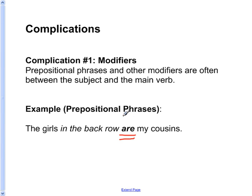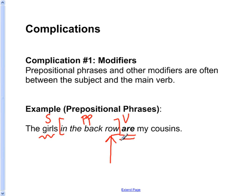Let's look at an example of a prepositional phrase between the subject and main verb. The main verb here is are. The subject of this sentence is girls. Between the subject and the main verb is the prepositional phrase in the back row. We know that a prepositional phrase cannot contain the subject of the sentence. However, if we didn't realize that, we might be tempted to think that row is the subject of the sentence. And row is singular.